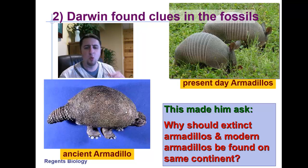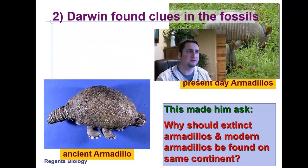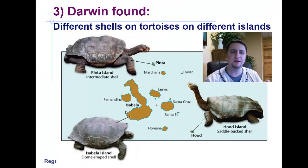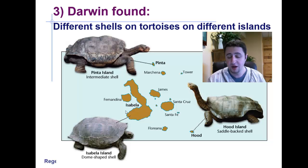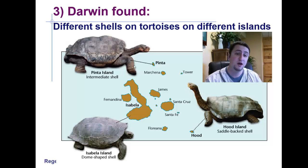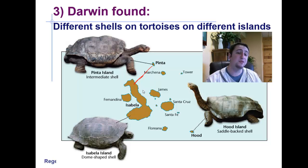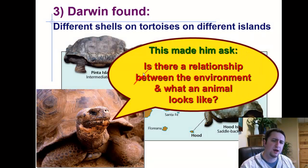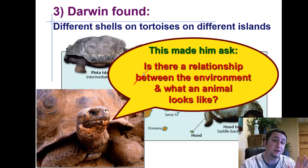And it sort of made him ask why there are extinct armadillos in the same area that we find modern armadillos. More specifically, why is all that found on the same continent? He also found some evidence of differences within living organisms themselves. He found that there were different sized shells of tortoises on different islands. Even though there may only be a couple of miles separating the island of Pinta from Isabella, there are some very distinct tortoises that live on each one of those islands. And he began to ask, is there a relationship between the environment? Is it possible that the environment that these different tortoises grew up on is causing them to look different?